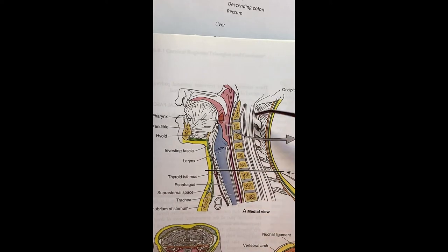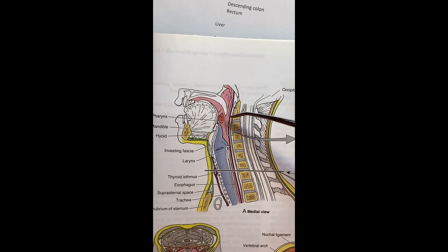For clarification, here again is a sagittal view of the human, and we can see the two pathways, one for air and one for food.